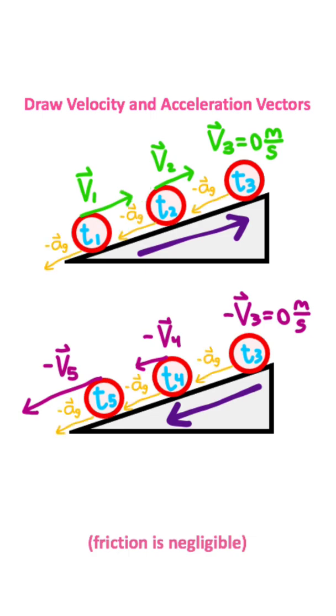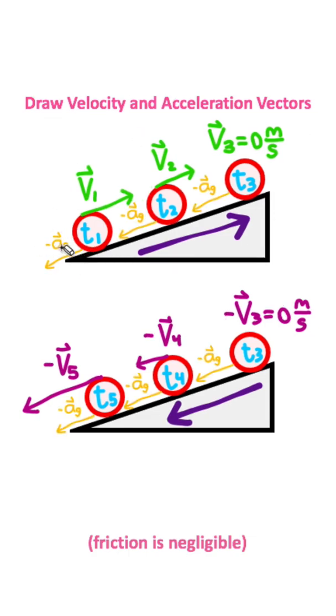Acceleration is going to look like this. Notice for this top diagram that the acceleration points in the opposite direction as the velocity vectors, causing these velocity vectors to decrease in magnitude as we go up the ramp.